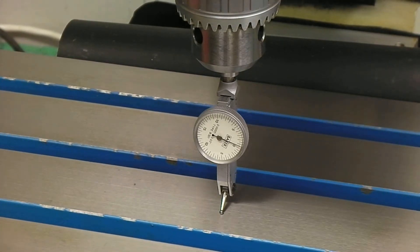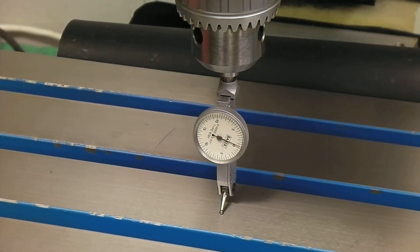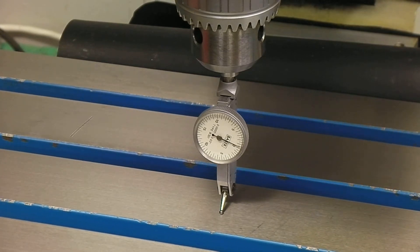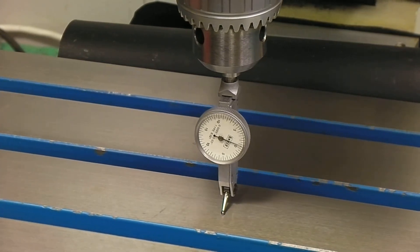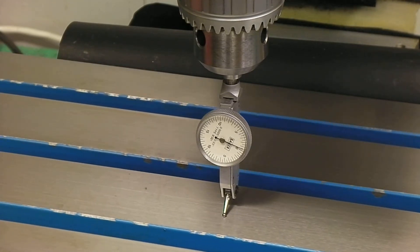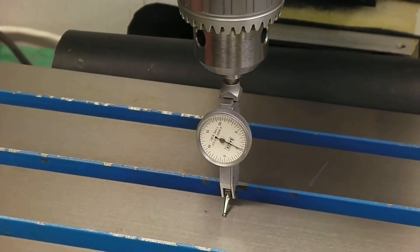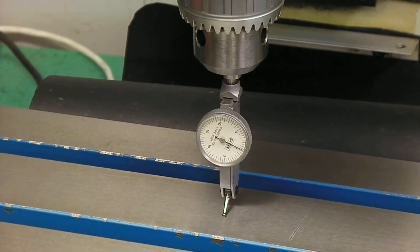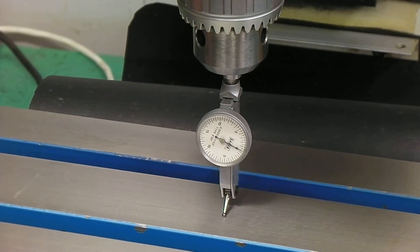Now the closer you get to the side of the ball screw that has the miss-machined support bearings, you can actually see it start to shake. Whoo! Start to shake the needle. See that wobble from the needle? That's from the ball screw being bent.